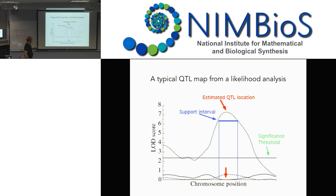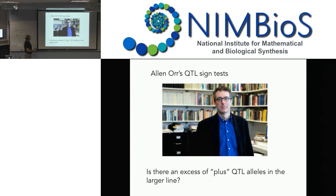QTL mapping allows us to find markers on chromosomes — usually five to ten. There are lots of issues with QTL mapping, but the question is: how can we use those data to do tests of selection? Alan Orr at Rochester was one who proposed this. Alan has also done very important work in adaptation, on Fisher's geometric landscape and the Maynard Smith molecular space models.